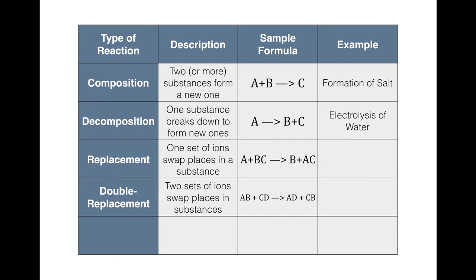For our graphic organizer, we'll add two types of replacement reactions. Single replacement: one set of ions swaps — A plus BC yields B plus AC. Double replacement: two sets of ions swap places — AB plus CD yields AD plus CB. Make sure you have that noted.